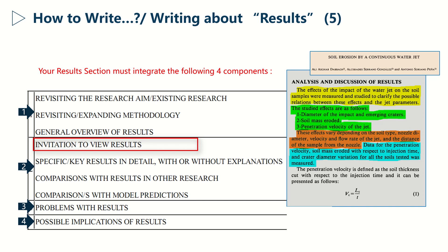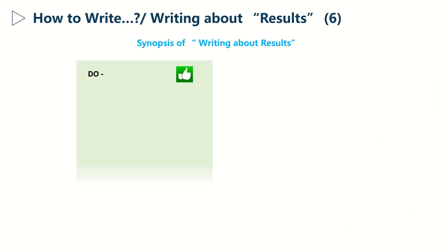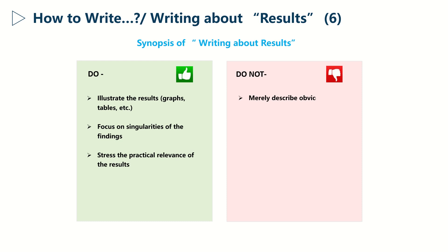Well, now let's see what you should do and shouldn't do in the results section. Obviously, you must illustrate the results with graphs and tables. Then you should focus on singularities of the findings and stress the practical relevance of the results. Don't just describe obvious facts that the reader can see by himself or herself from your curves. This is not good practice.